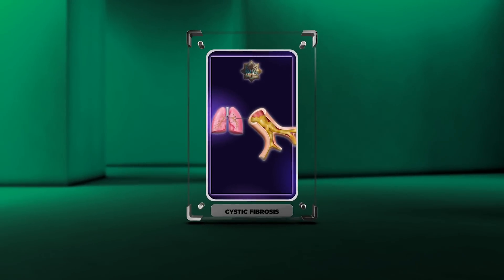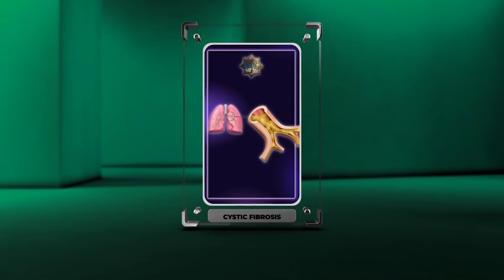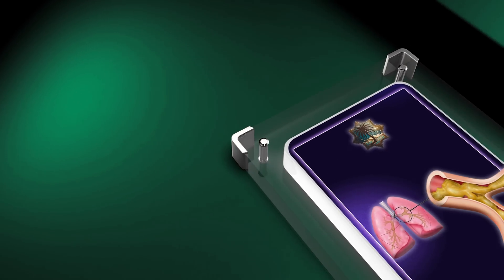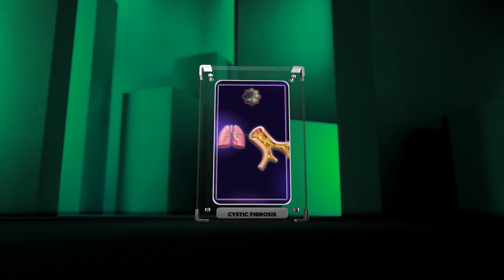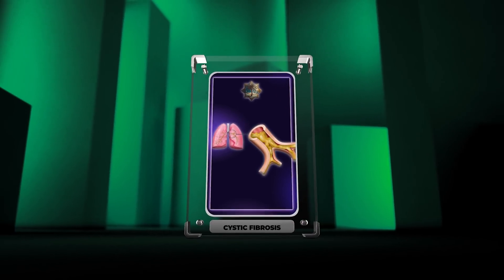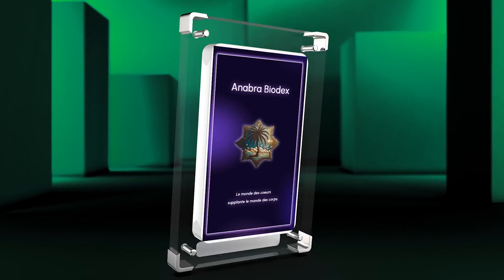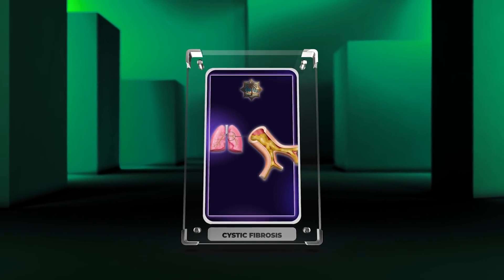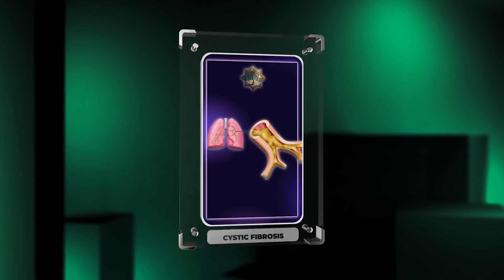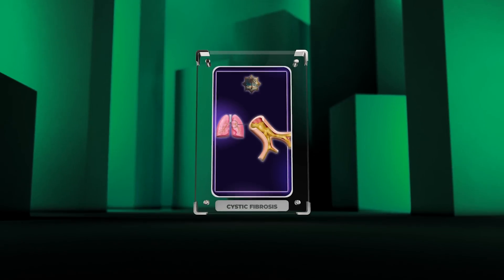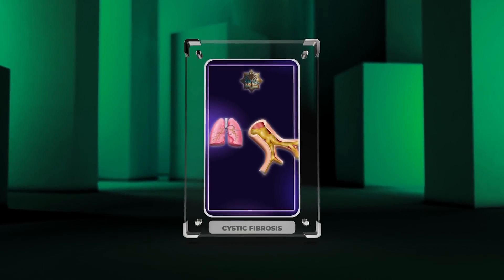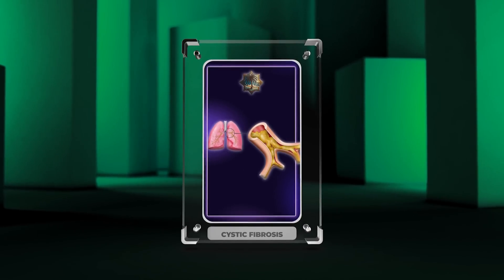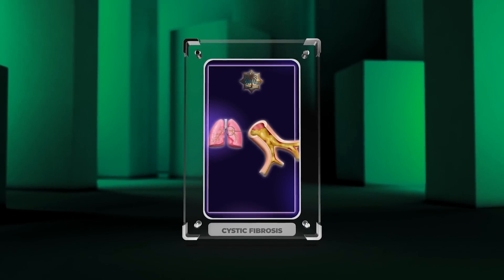Cystic fibrosis is a complex genetic disorder that affects the respiratory and gastrointestinal systems. This video will provide a comprehensive overview of CF, including its genetics, CFTR protein, manifestations, complications, testing methods, management strategies, and potential treatments. It aims to equip medical students with the knowledge needed to diagnose and care for CF patients.